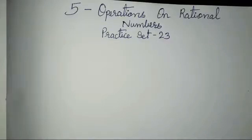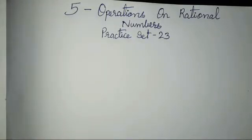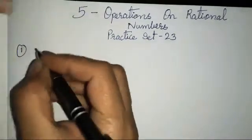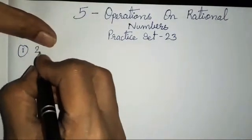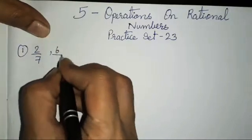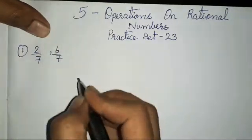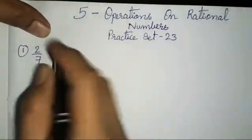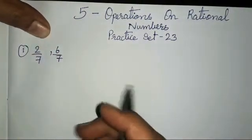Hello everyone. Today we are going to study Chapter 5: Operations on Rational Numbers, Practice Set 23, which we are going to complete in today's video. The first question asks us to find 3 rational numbers that lie between 2 given numbers. The 2 given numbers are 2/7 and 6/7.